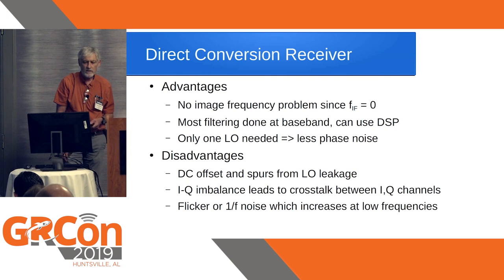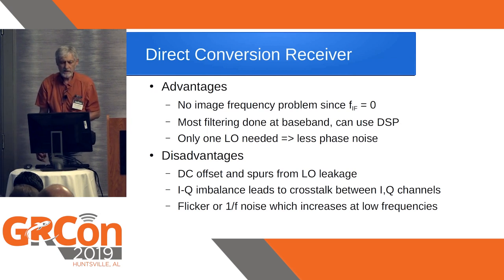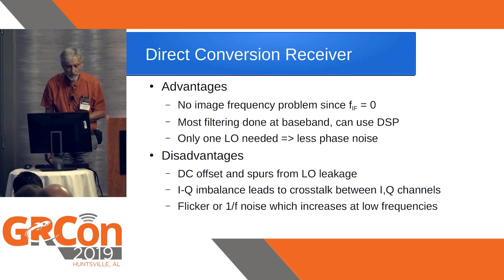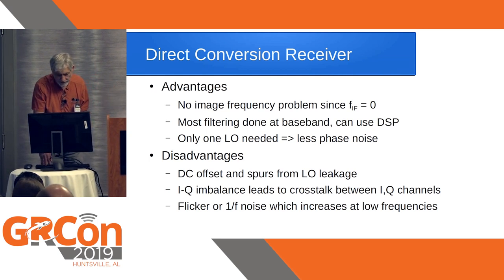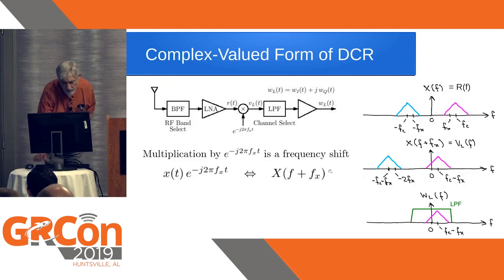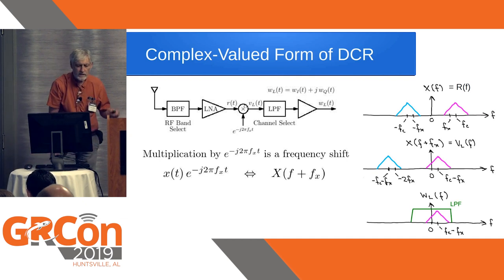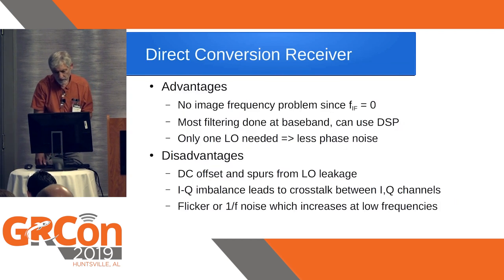Advantages of the DCR: no image frequency problem because the intermediate frequency equals zero, most filtering is done at baseband using digital signal processing, and only one local oscillator is needed — resulting in less phase noise. Disadvantages include DC offset and spurs from LO leakage: since the whole chain operates at the radio frequency being received, there can be feedback from the output back into the low-noise amplifier, causing oscillations and spurs in the output spectrum.